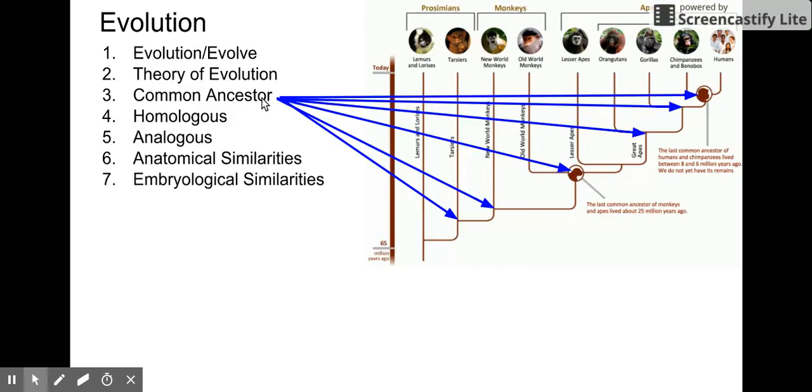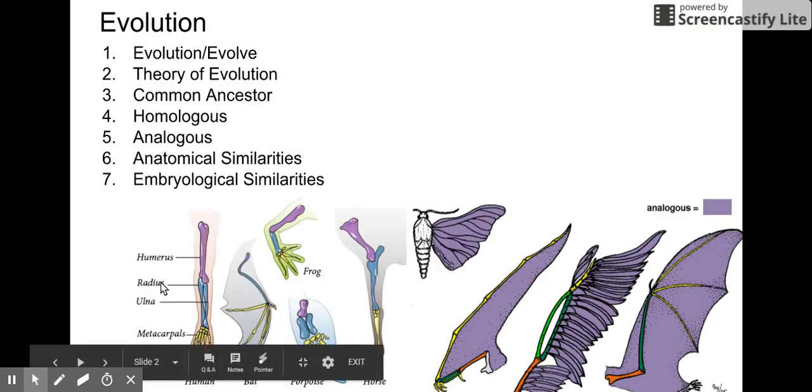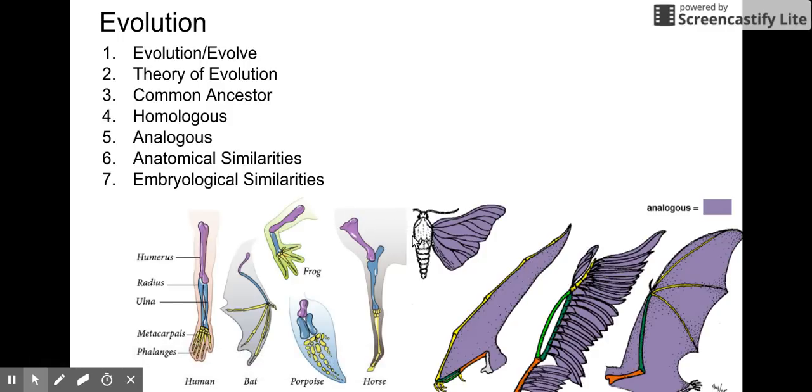Now, when you're looking at common ancestors, you're going to be looking at body structures, and then that's going to show you homologous structures. These on the left-hand side of the diagram are all homologous structures. They're going to point toward having a common ancestor. All of these organisms, the human, bat, porpoise, frog, and horse, all have the same set of bones, but those bones are doing different things in those five different organisms.